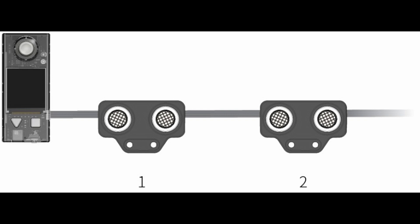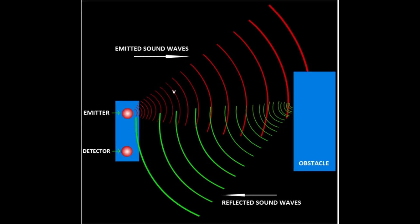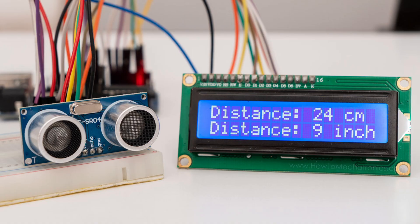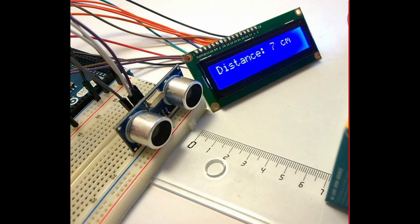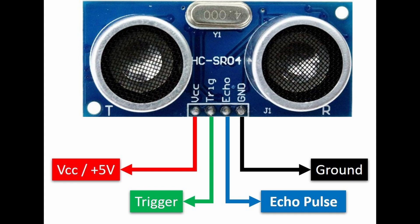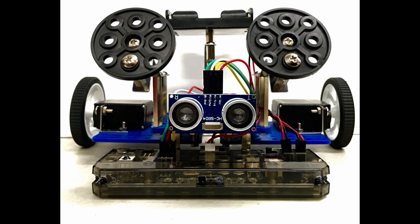Ultrasonic waves travel faster than the speed of audible sound — that is, the sound that humans can hear. Ultrasonic sensors have two main components: the transmitter, which emits the sound using piezoelectric crystals, and the receiver, which encounters the sound after it has traveled to and from the target. To calculate the distance between the sensor and the object, the sensor measures the time it takes between the emission of the sound by the transmitter to its contact with the receiver.